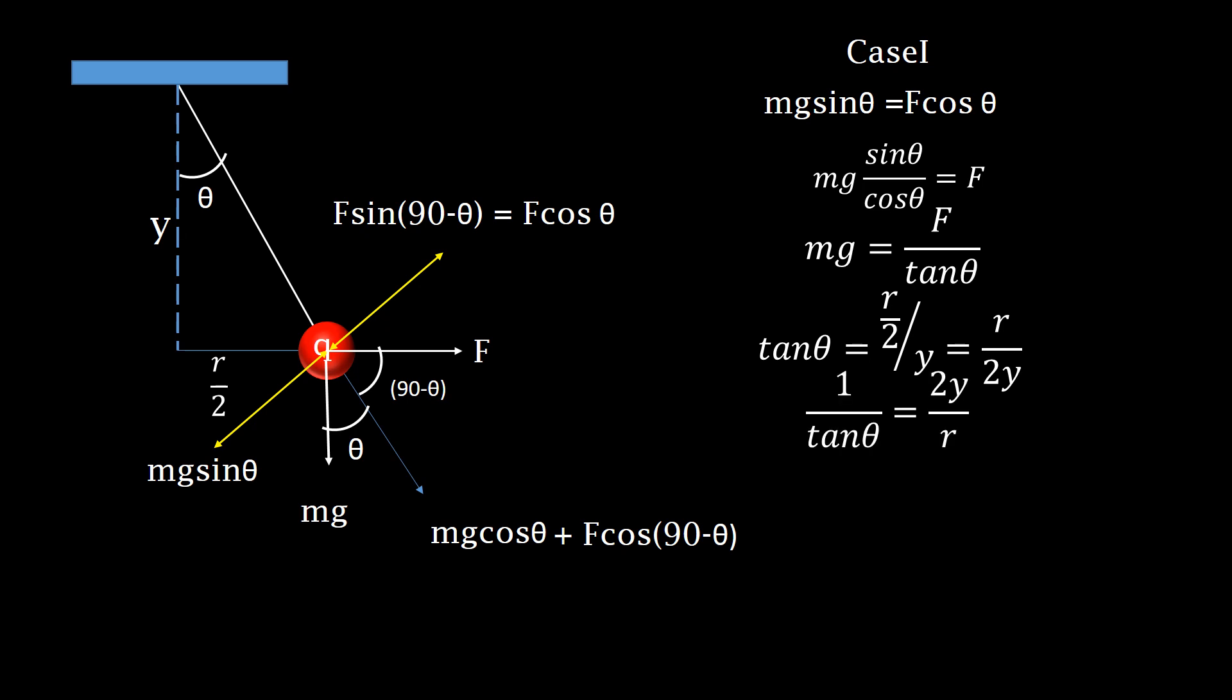Reciprocal of tan theta equals 2y upon r. Substituting the value of 1 upon tan theta in the above equation we get mg equals 2Fy upon r. Mark it as equation 1.